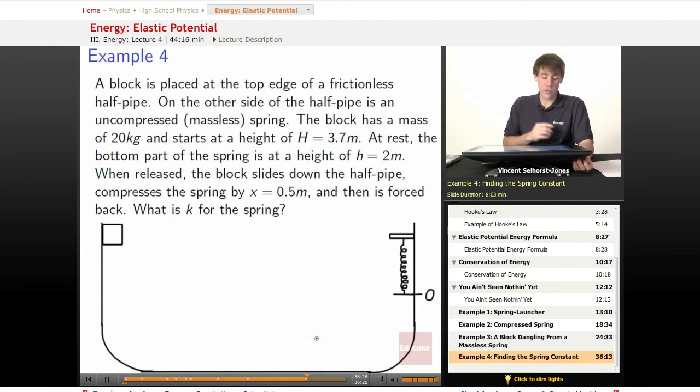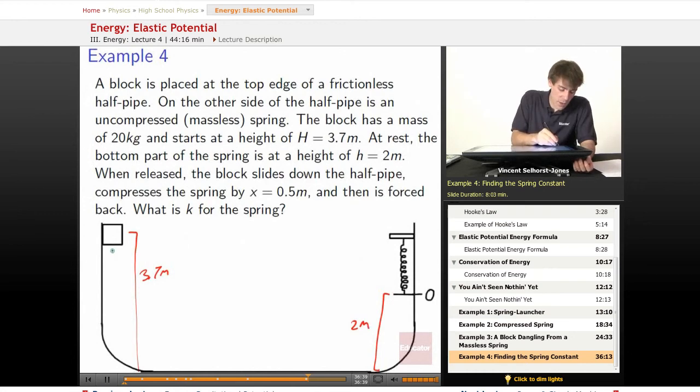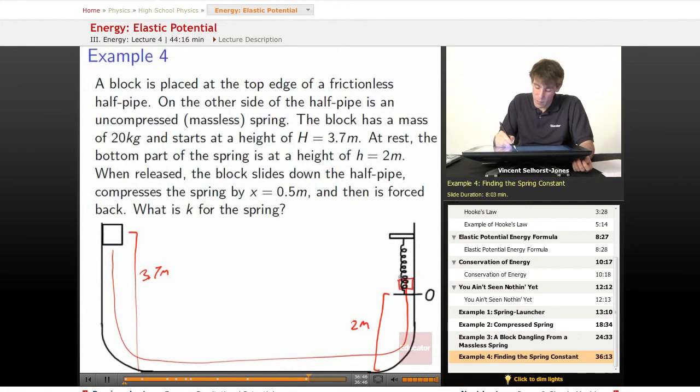The block has a mass of 20 kilograms and starts at a height of 3.7 meters. At rest, the bottom part of the spring is at a height of 2 meters. When released, the block will slide down the half-pipe, compress the spring by x equals 0.5 meters.